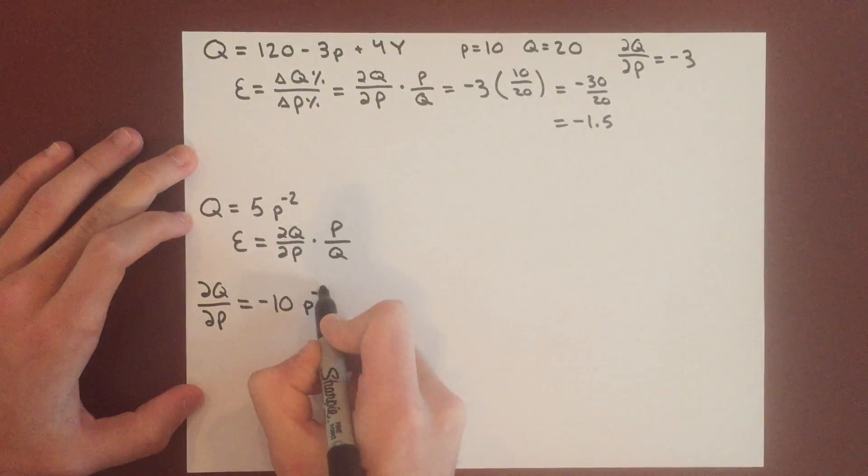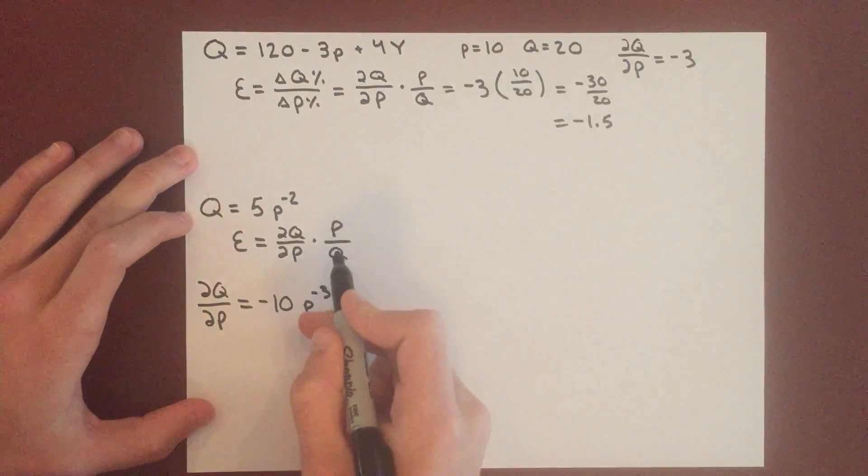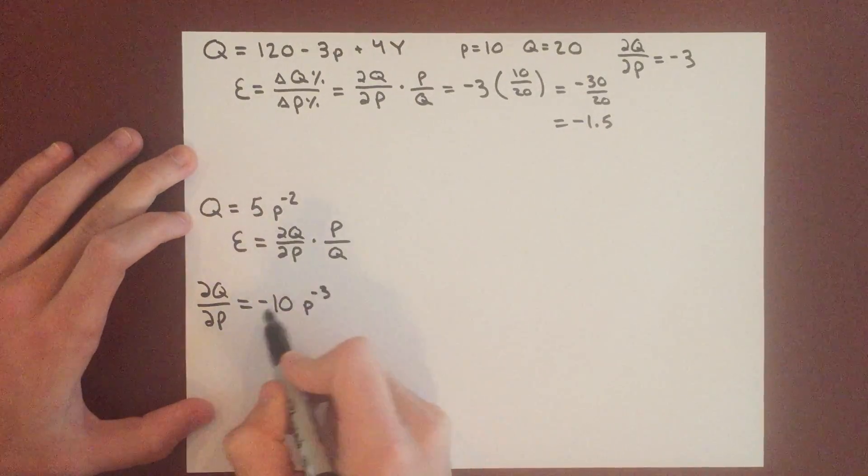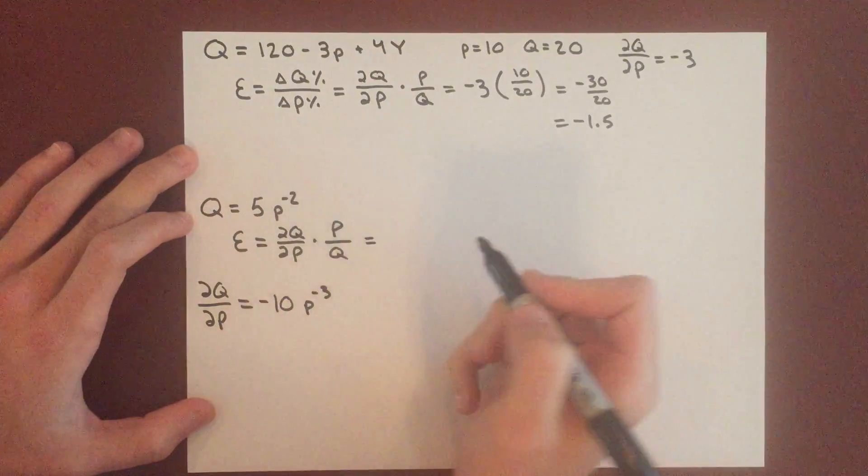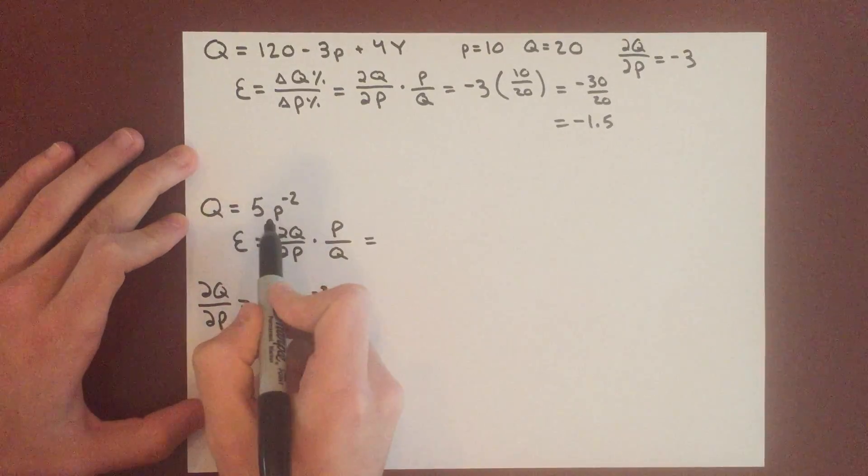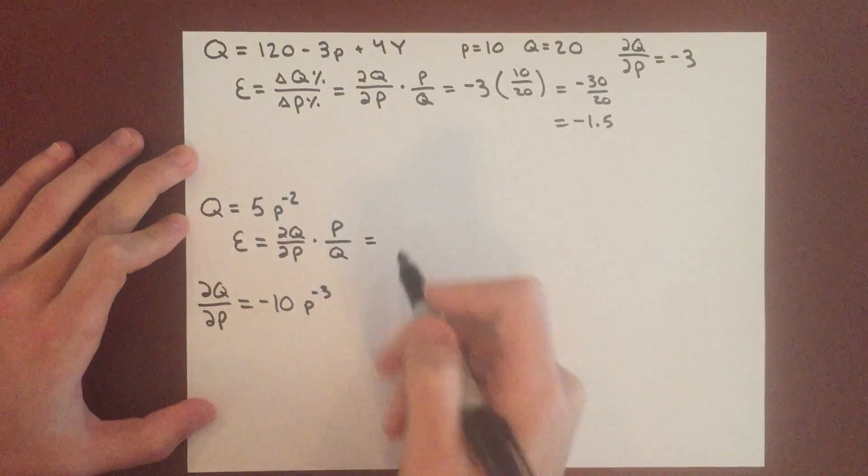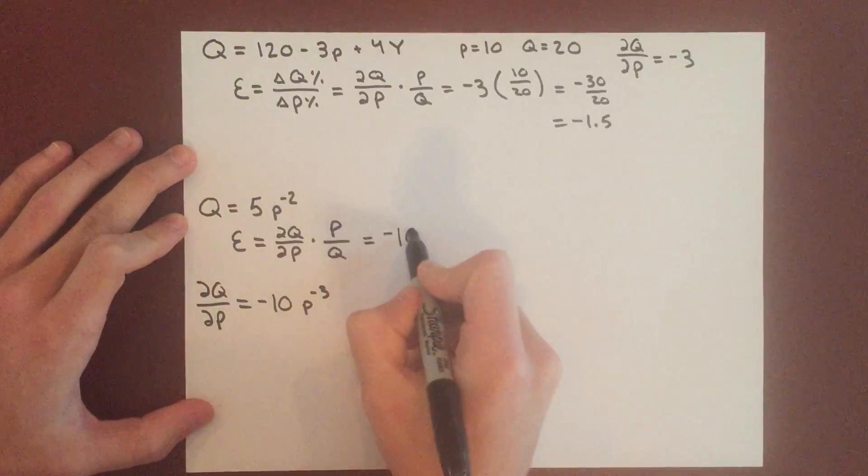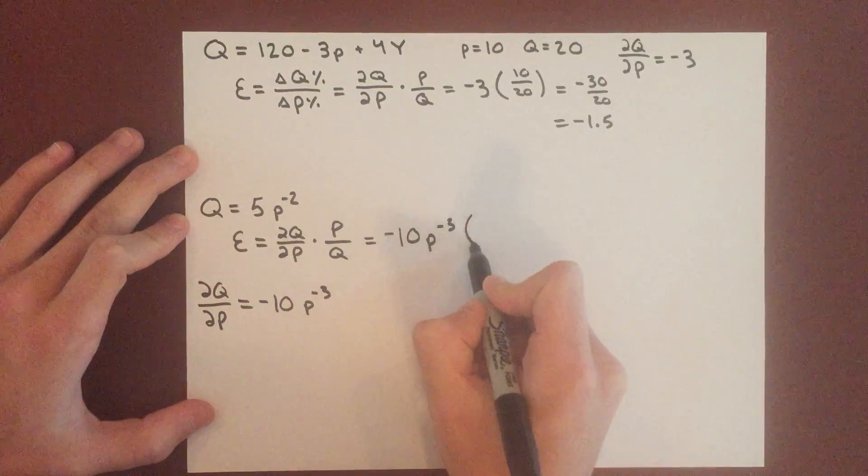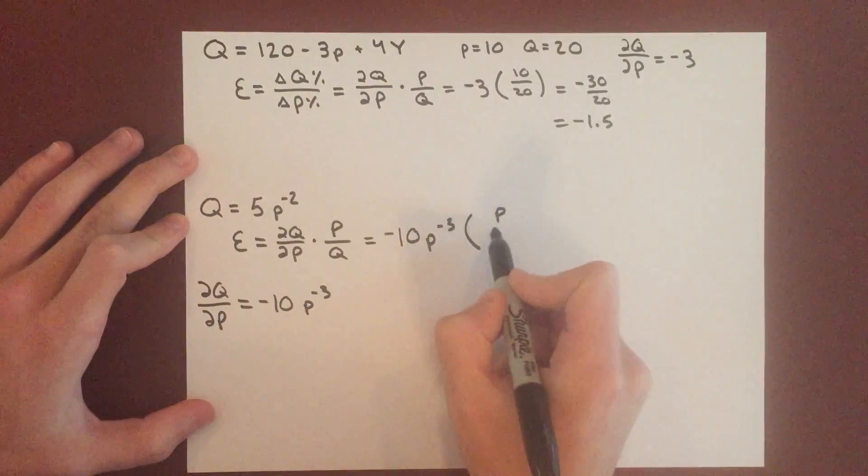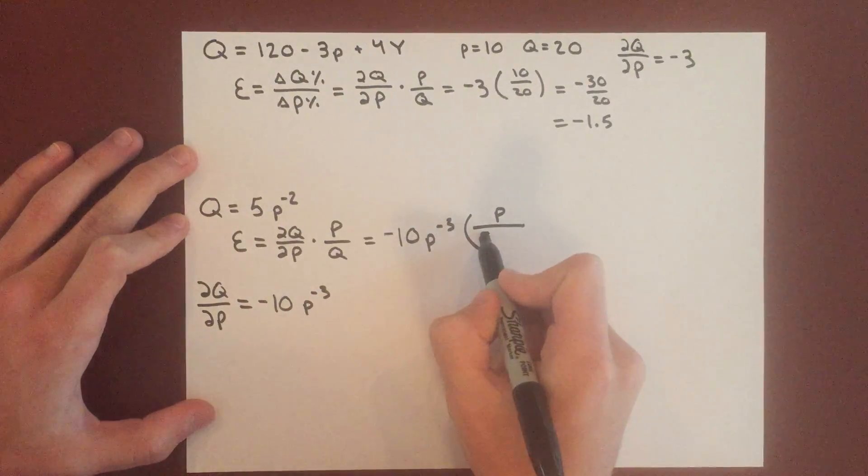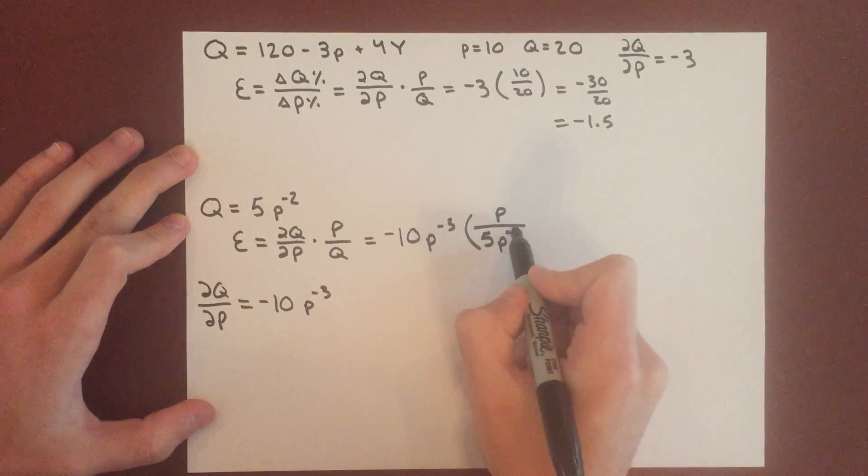then subtract 1 from the power. Then we multiply this by P over Q, and Q we're going to substitute in 5 P to the minus 2. So negative 10 P to the minus 3 times P over 5 P to the negative